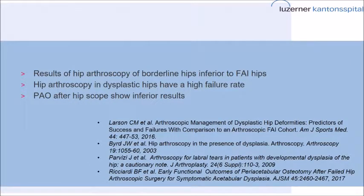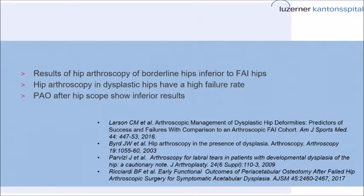In general, the results of hip arthroscopy of borderline hips is inferior to the general impingement hips. Hip arthroscopy in dysplastic hips has a high failure rate, and in a recent work it was also shown that a previous hip arthroscopy in a dysplastic or unstable hip has a negative impact on the result of the PAO.